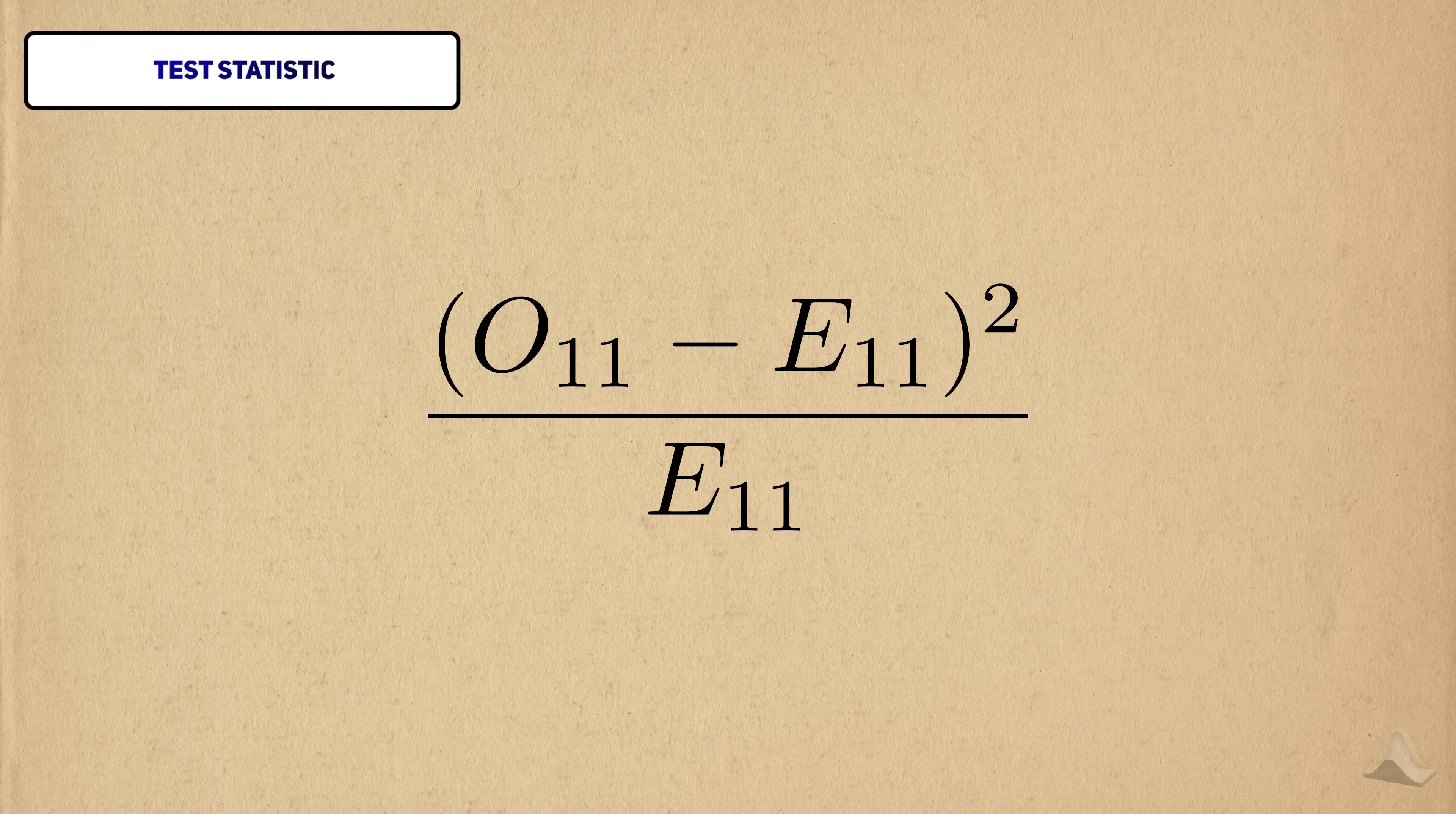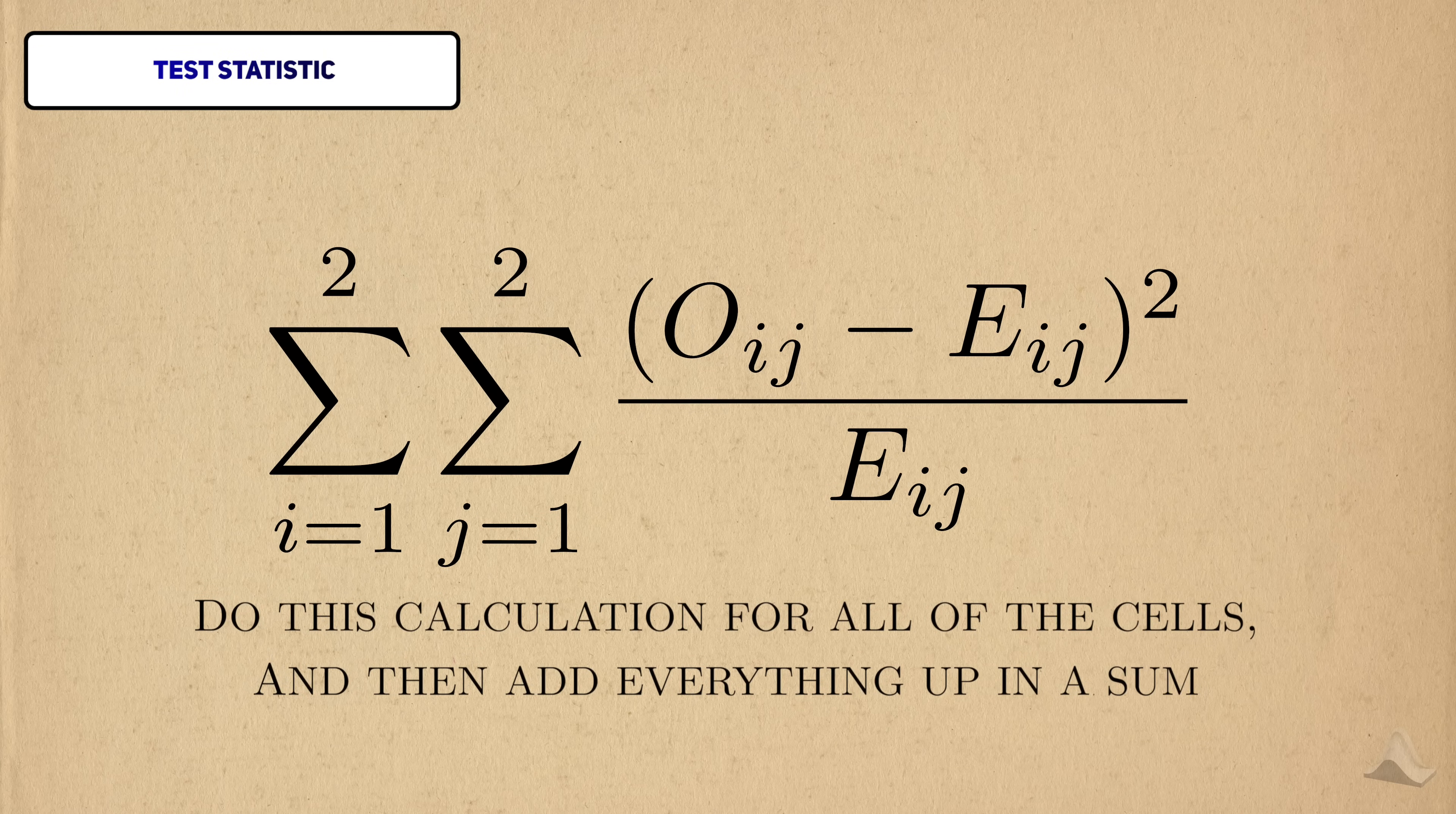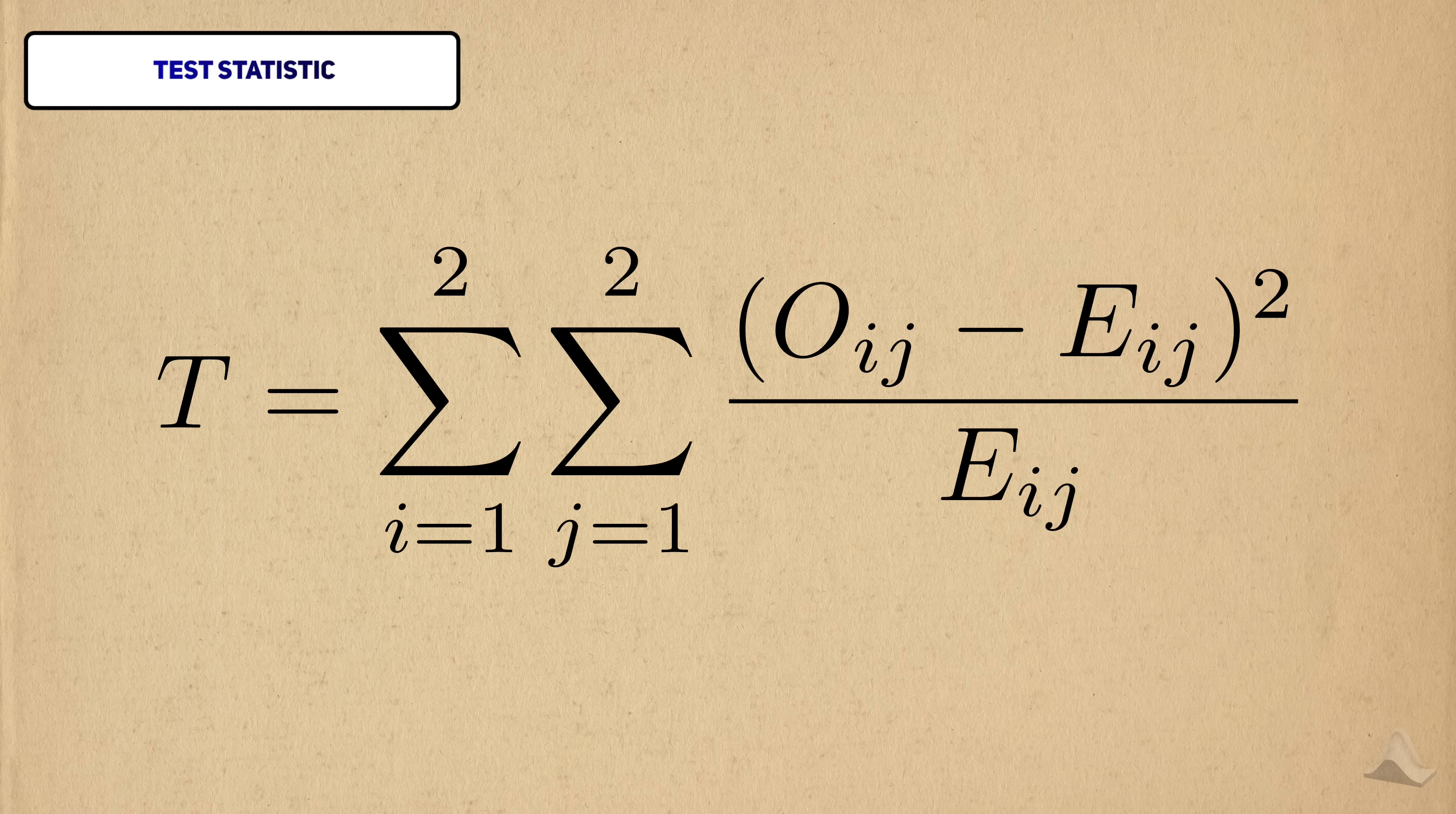This calculation is just from one of the cells, so to use the entire contingency table, we calculate it for all the cells and sum it all together. In the end, we have the test statistic proposed by Carl Pearson when he first published about the chi-squared tests.